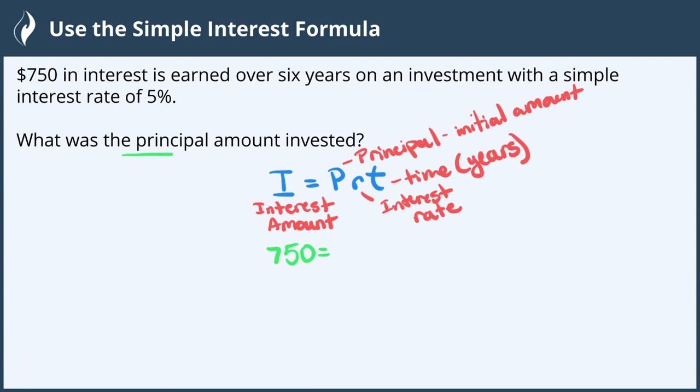We were asked what the principal is, which is represented by the variable P. The rate is 5%, and T is six years.